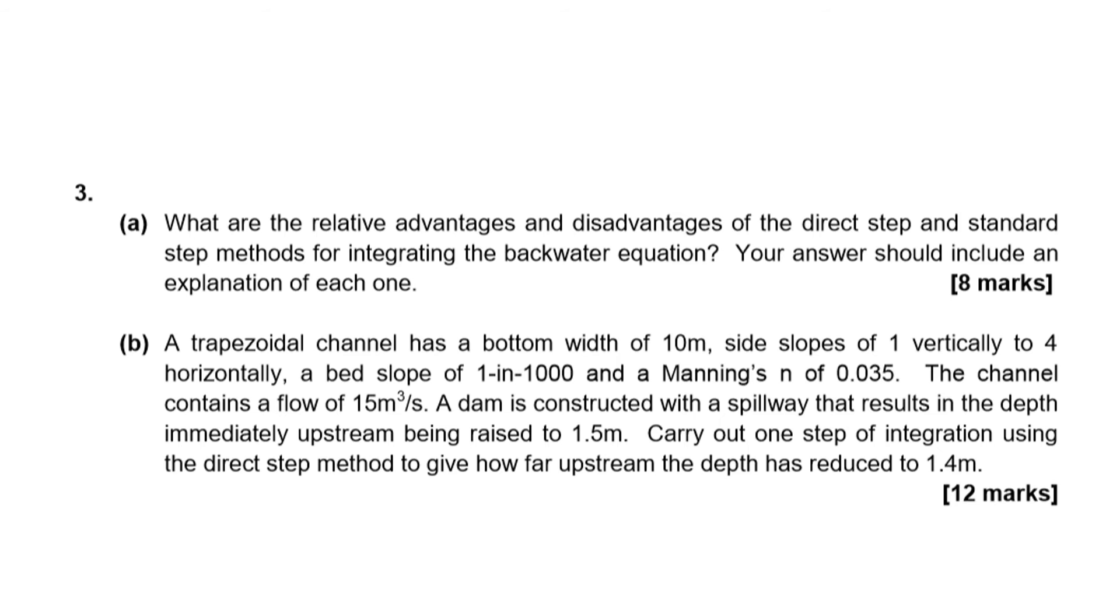Part B is where you need to do the calculation. It says a trapezoidal channel has a bottom width of 10 meters, side slopes of 1 vertical to 4 horizontal, bed slope of 1 in 1000, Manning's n value of 0.035. The channel contains a flow of 15 m³/s. A dam is constructed with a spillway that results in the depth immediately upstream being raised to 1.5 meters. Carry out one step of integration using the direct step method to give how far upstream the depth has reduced to 1.4 meters.